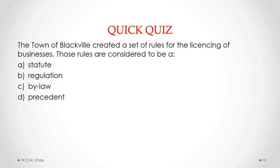Let's now look at a quick quiz question. Please pause this video so you can consider this question. The answer is C — bylaw. The Town of Blackville created a set of rules for the licensing of businesses. Those rules are considered to be bylaws, which are laws created or passed by municipalities.